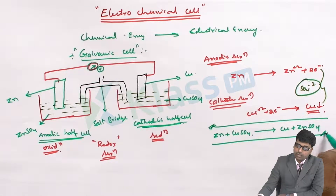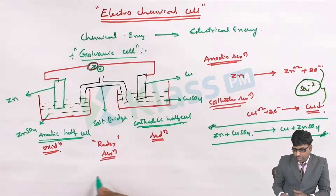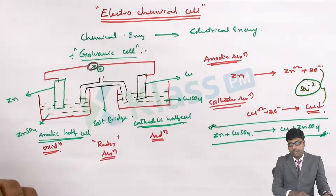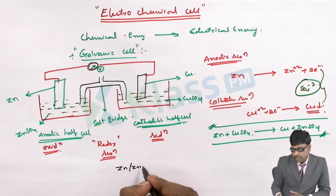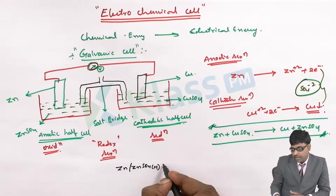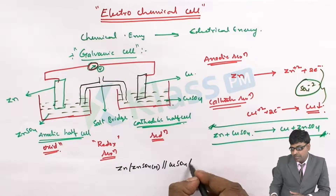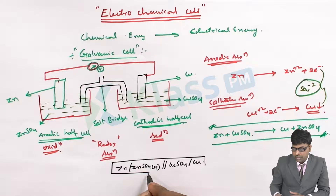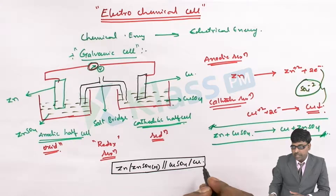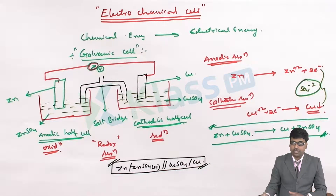This is one of the best examples of an electrochemical cell. If you try to represent it, it will be shown as: Zn | ZnSO₄ (some molarity) || CuSO₄ (some molarity) | Cu. This whole systematic diagram can be represented by this cell notation process.